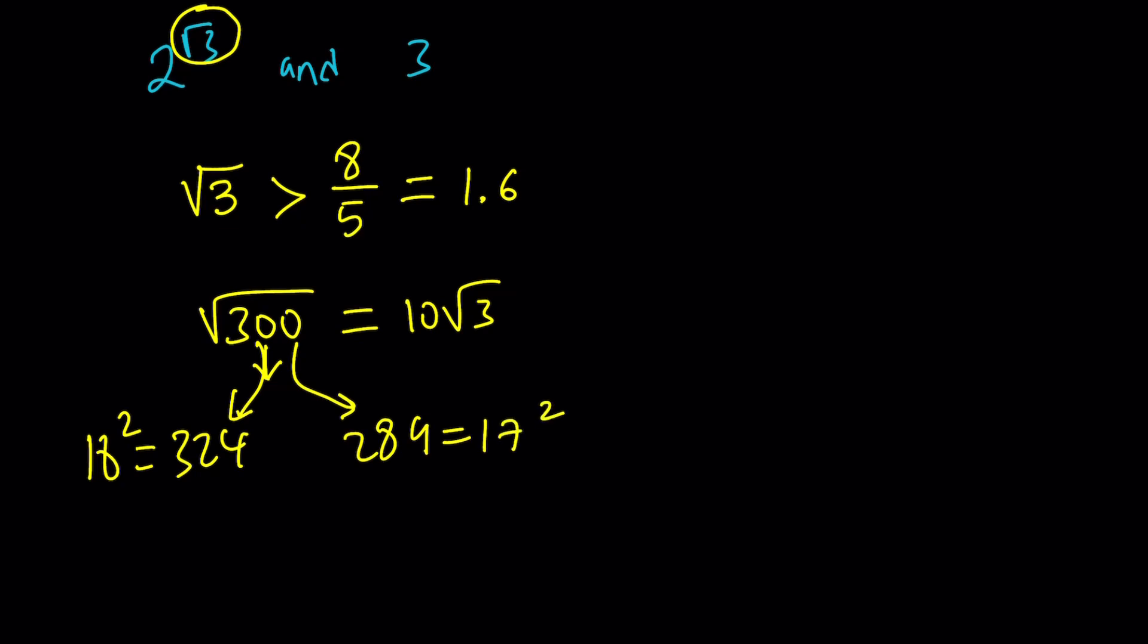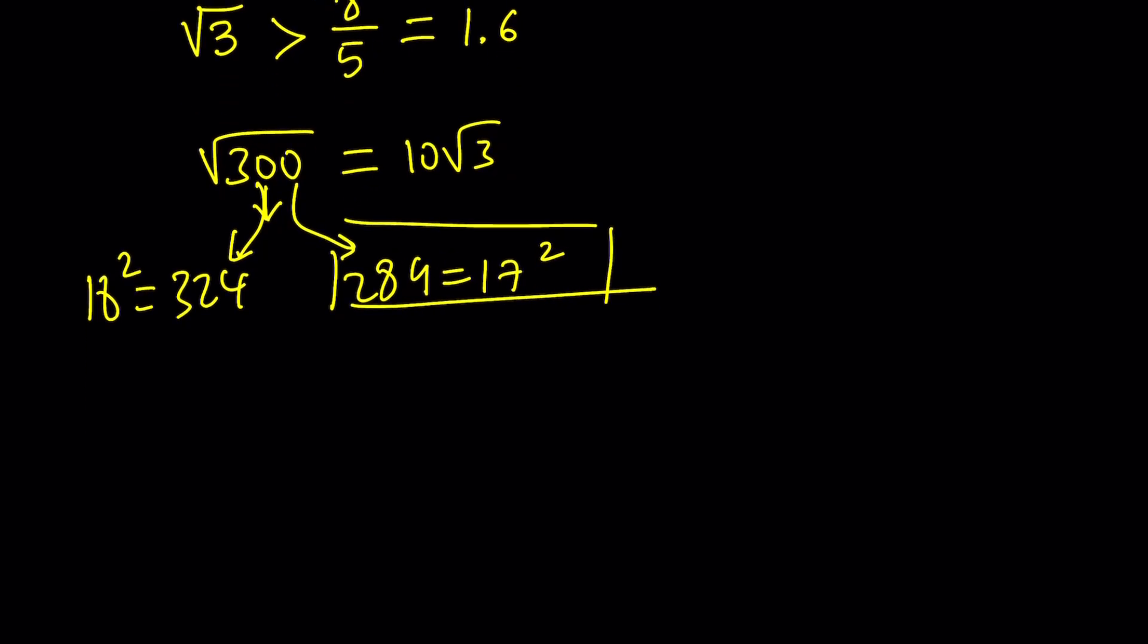By the way, 289 seems a little closer. Let's go with that. So, how can I use this information? Because 289 is 17 squared, 2.89 would be 1.7 squared. Make sense?